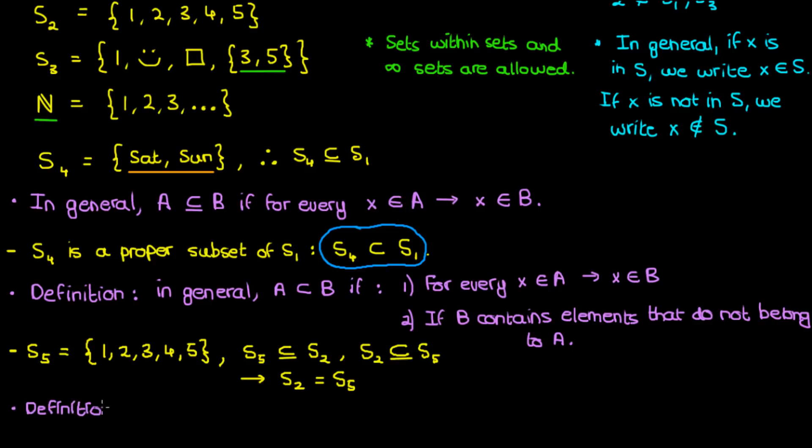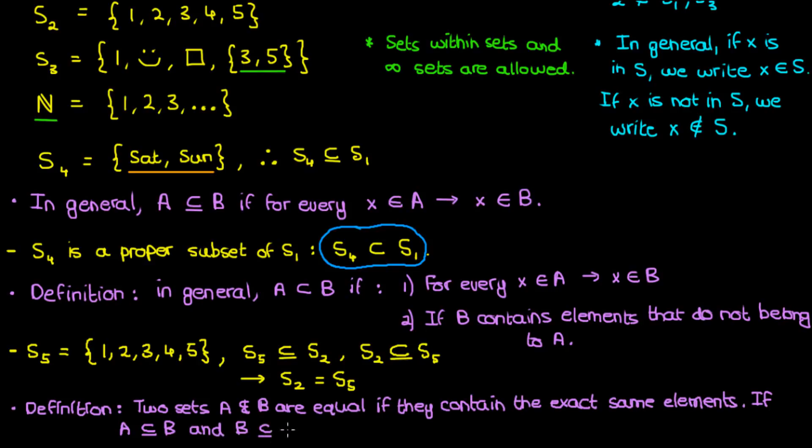Just to define the idea of set equality, two sets are equal if they contain the exact same elements, and another way to define this is that if A is a subset of B and B is also a subset of A, then A and B are equal. In fact this is often how we prove in theorems that two sets are equal by showing that they're subsets of each other.